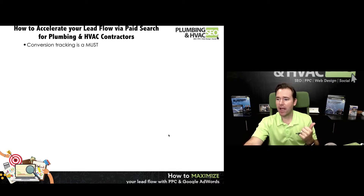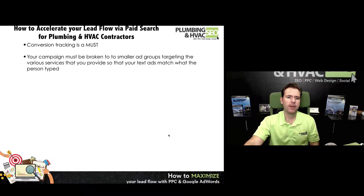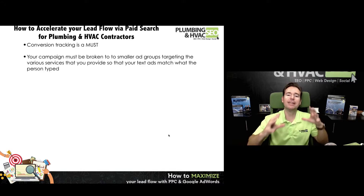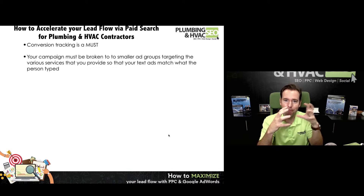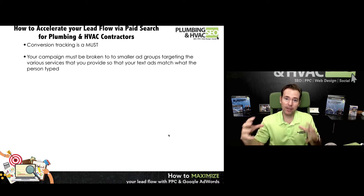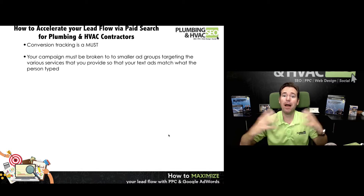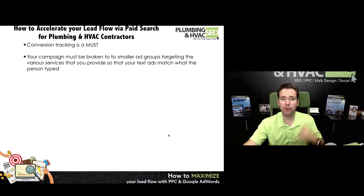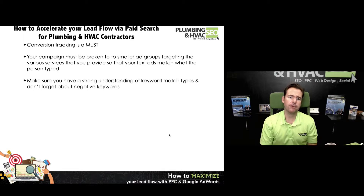You have to track. If you're not tracking, you really don't have any business running a pay-per-click campaign. If you don't know the KPIs, you're wasting money. Your campaign has to be broken down into smaller targeted ad groups so that you can get the relevancy, which gets your lower cost per click, which makes it possible to generate enough clicks to generate enough calls to make money with your pay-per-click campaign.